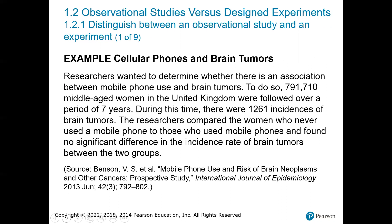Example: cell phones and brain tumors. Researchers wanted to determine whether there is an association between mobile phones and brain tumors. To do so, 791,710 middle-aged women in the UK were followed over a period of seven years. During this time there were 1,261 incidences of brain tumors. The researchers compared women who never used a mobile phone to those who did and found no significant difference in the incidence rate of brain tumors between the two groups. All studies discussed here are real studies you can look up.